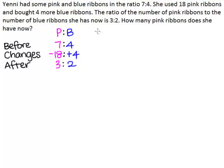We can express the new ratio over here. Here we have the column for the pink ribbons. 3 needs to be multiplied by 2 to make 6, so we will multiply each of the numbers in this column by 2. Here we have 7, and 7 times 2 will give us 14. Here we have minus 18, and when we multiply that by 2, we will have minus 36. Here we have 3, and 3 times 2 is 6.